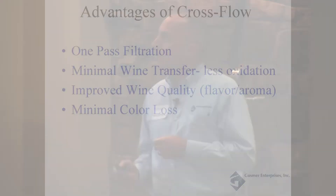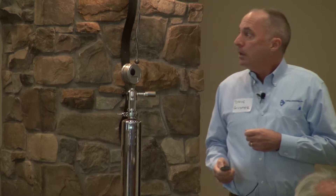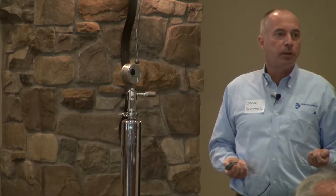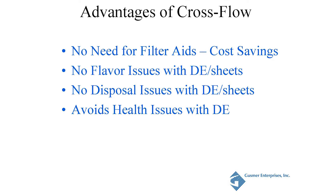What are the advantages of crossflow? It's one-pass filtration — you're not using coarse DE followed by polished DE, then tight DE, followed by a filter sheet. We had some wineries that had five filtration steps; you cut all of them out to one with crossflow. Because you're only moving the wine once, there's minimal wine transfer and less oxidation. You have improved wine quality because you're not moving and oxidizing the wine. DE or cellulose filter sheets can absorb a lot of color — you don't see the color loss when using crossflow.